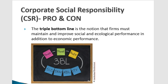The triple bottom line is the notion that firms must maintain and improve social and ecological performance in addition to economic performance. Not only do they have to make a profit, but they have to do it in a way that improves society and the environment. People, planet, and profit is what consumers today expect companies to strive for — doing what's better for people and the community, what's better for the planet and environment, and making profits in a sustainable way. Managers now have to focus not just on profits, but on these two other areas more closely linked to CSR, or face a backlash from customers who view them as an evil organization not benefiting society.